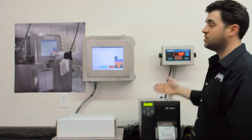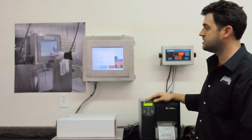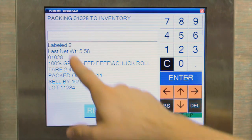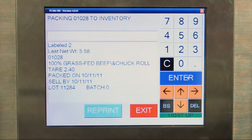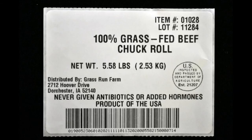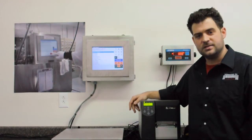Wait for my weight to settle and I press print. Now this product is automatically added to the inventory. We can also configure it so as soon as the weight settles on the scale head the label automatically prints. The PC4XE says that I've labeled two. My last net weight is 5.58. Same thing it says on the label. Labeling with Vistatrack is that easy.